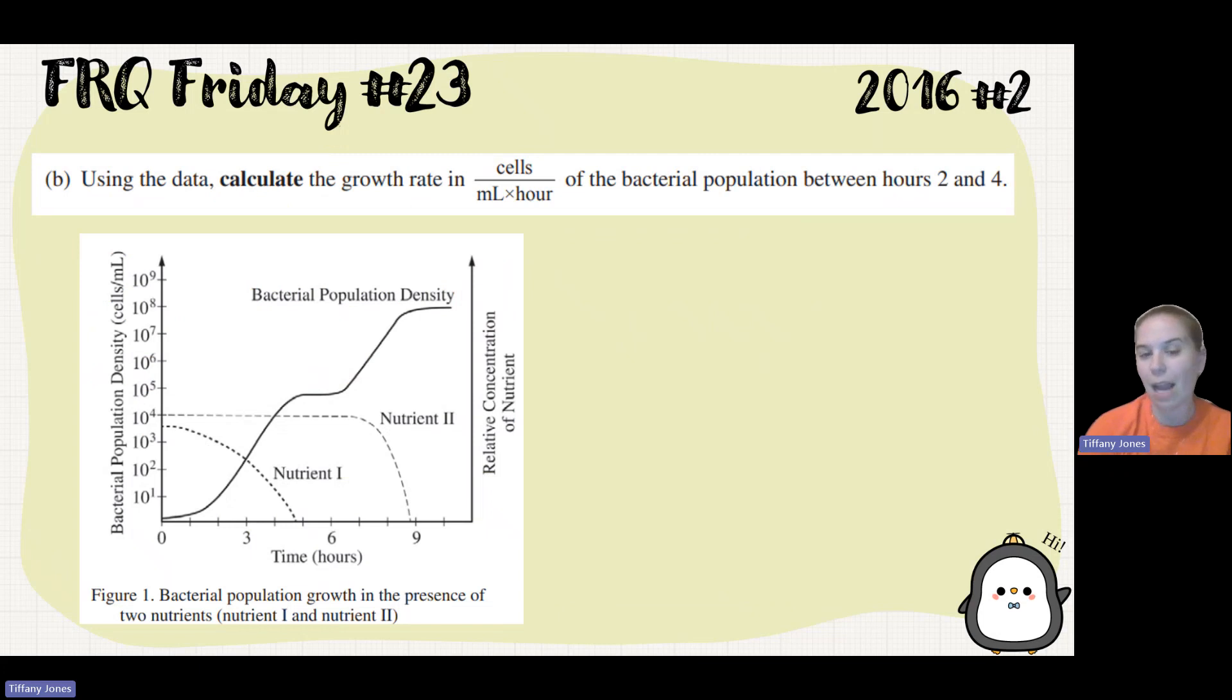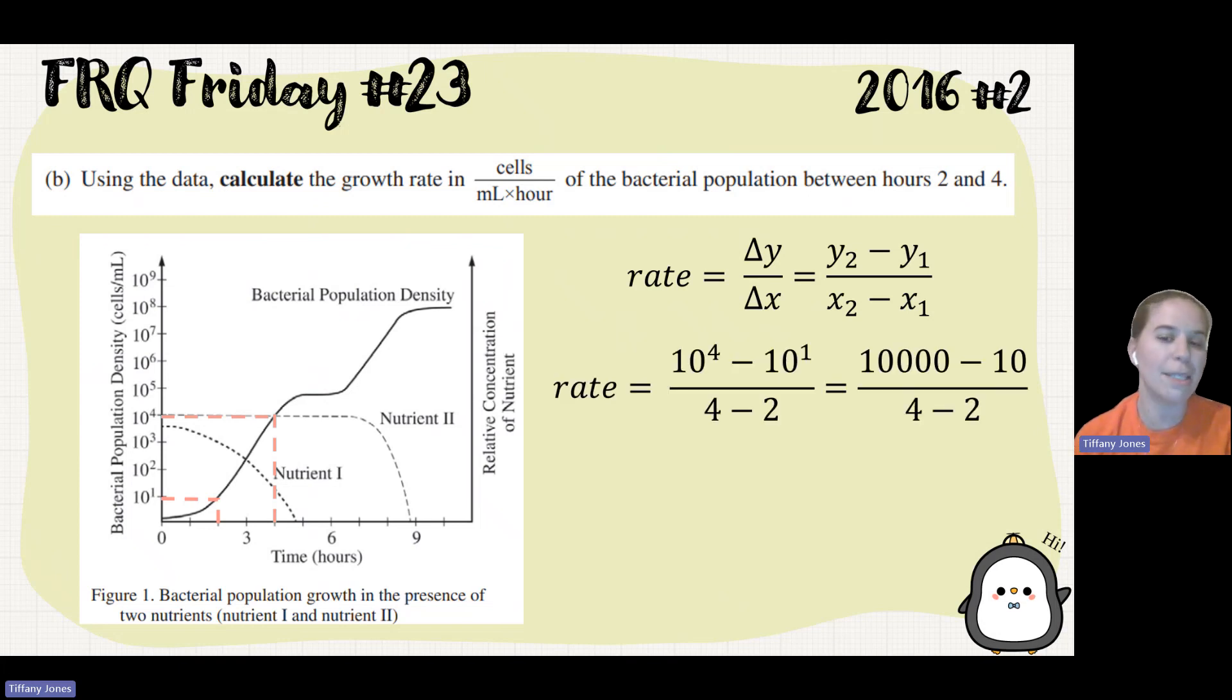Part B, using the data, calculate the growth rate in cells per milliliter per hour of the bacterial population between hours two and four. So first thing I do is look at our graph. At two, we see that I have 10 to the 1st cells per milliliter. And at four, I've got 10 to the 4th cells per milliliter. When we're looking for rate, we're just looking for the change in Y over the change in X. So Y2 minus Y1 over X2 minus X1.